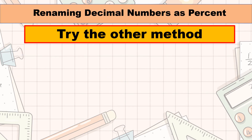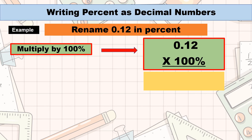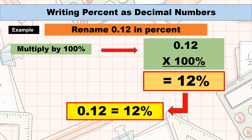Let's try the other method. Let's multiply 12 hundredths, or 0.12, by 100%. What did you get? If your answer is 0.12 multiplied by 100% is equal to 12%, you are correct.